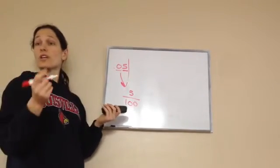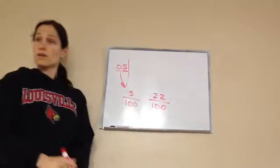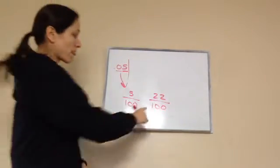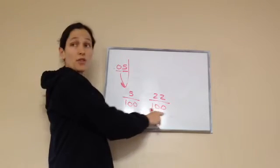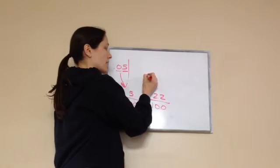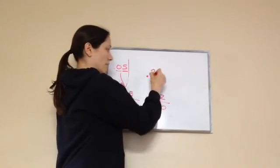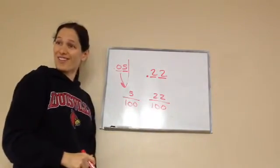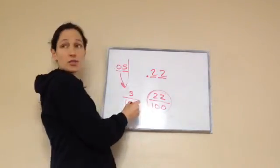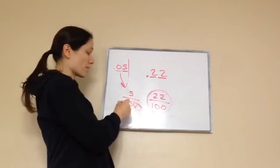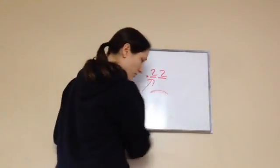You can also go the other direction — take a fraction and make it into a decimal. For example, twenty-two over one hundred: since the denominator is hundreds, you need two decimal spots — tenths and hundredths — and place twenty-two there. As long as the denominator is tens, hundreds, thousands, or ten-thousandths, you can convert any fraction to a decimal. That's lesson 106!